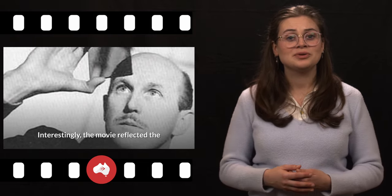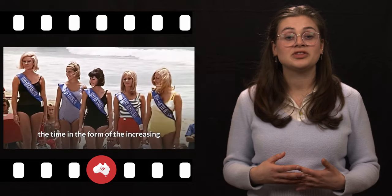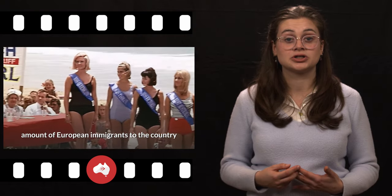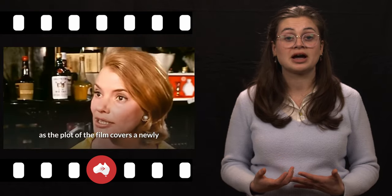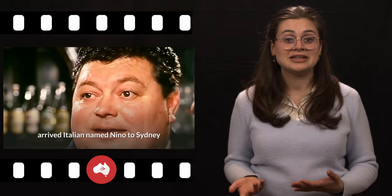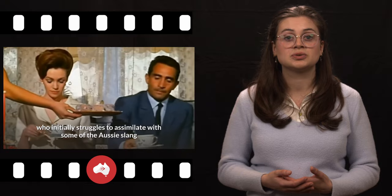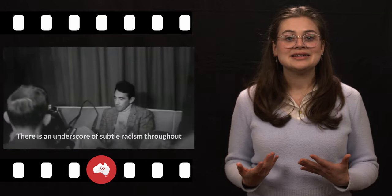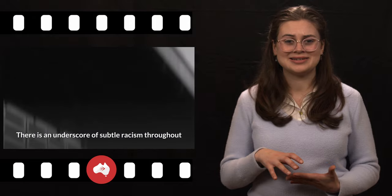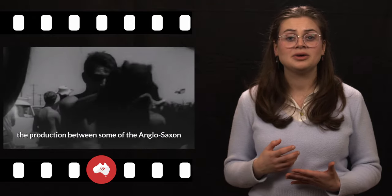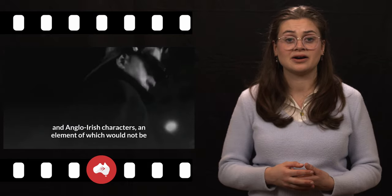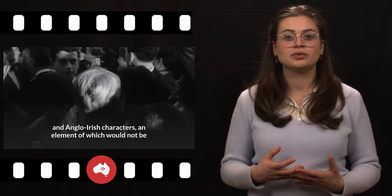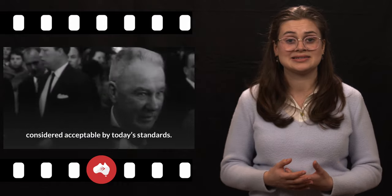It wasn't until the middle of the decade in 1965 that another worthwhile hit surfaced, titled They're a Weird Mob, based on a novel by John O'Grady and directed by Michael Powell. Interestingly, the movie reflected the changing cultural landscape of Australia at the time in the form of the increasing amount of European immigrants to the country, as the plot of the film covers a newly arrived Italian named Nino to Sydney, who initially struggles to assimilate with some of the Aussie slang and cultural norms but eventually falls in love with the locale.